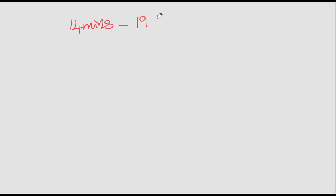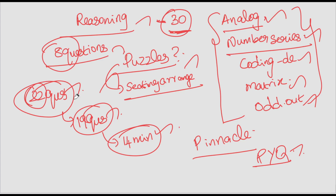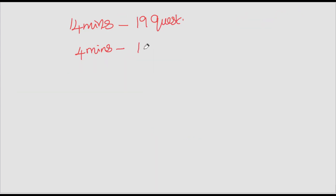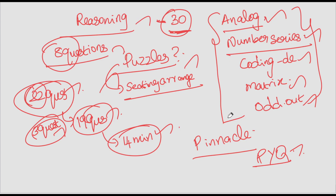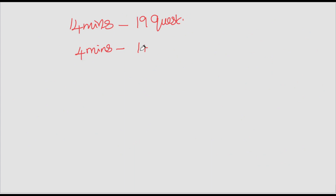In the 14 minutes, solve 19 questions. Then with the remaining 4 minutes, solve 3 more questions — including difficult ones like number series. Out of 8 difficult questions, you can solve 3 to 4 in 4 minutes. So 1 question plus 3 questions gives you a total of 23 questions solved in 18 minutes using this approach.